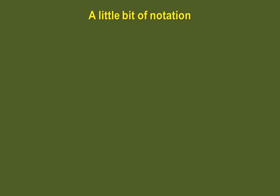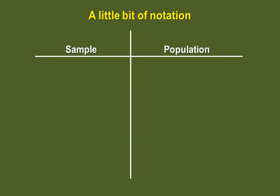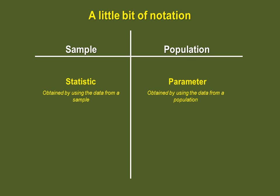How we note the different measures we take depends on whether they are done on samples or on populations. When we calculate measures based on data taken only on samples, we talk about statistics. On the other hand, when we calculate measures based on data taken on a population, we talk about parameters.